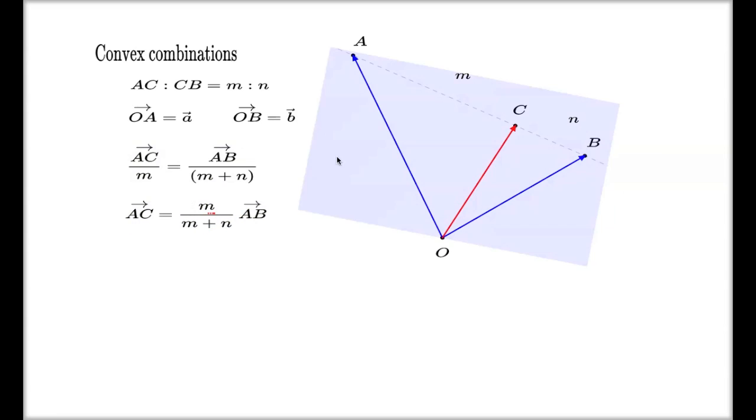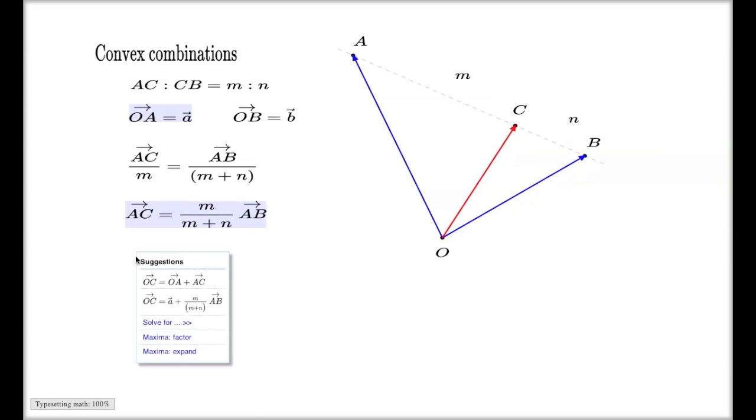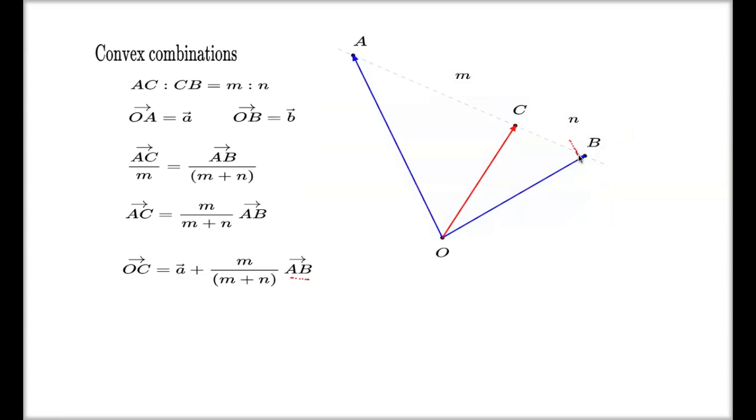And now if you want to find the OC vector, all you have to do is add this OA and this AC, and that will be the OC vector after addition. The AB vector is the difference of B and A. That's the expression for the AB vector.